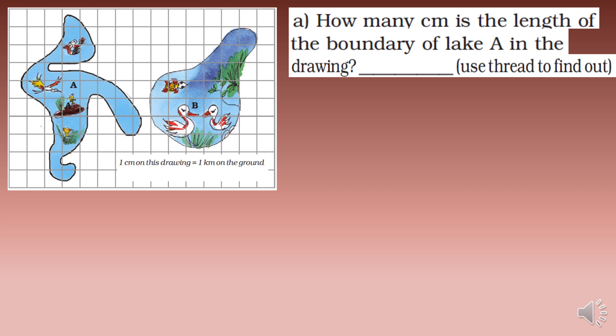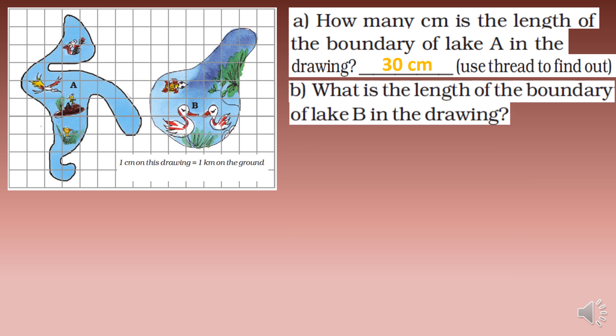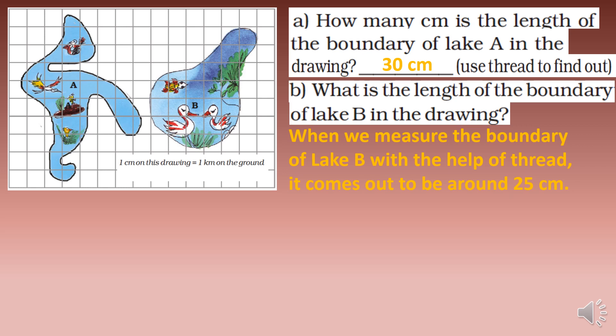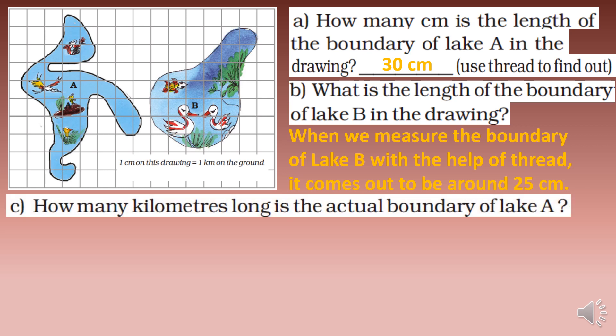How many centimeters is the length of the boundary of Lake A in the drawing? The shape of Lake A is irregular, so you can use thread to find it out. Using thread, you will find it is approximately 30 centimeters. In the same way, when we measure the boundary of Lake B with the help of thread, it comes out to be around 25 centimeters.